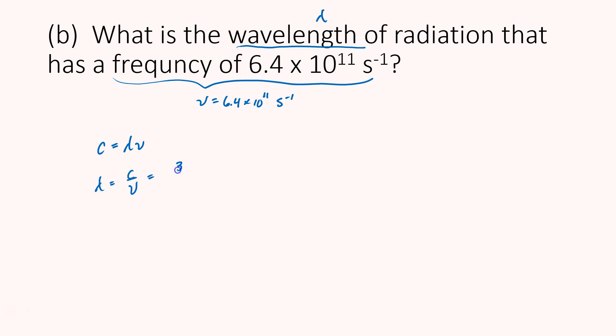C is 3.00 times 10 to the 8th meters per second. And this is kind of nice. The units of frequency can be used as they are. I'm just going to divide by 6.4 times 10 to the 11th. Reciprocal seconds could be rewritten as 1 over seconds. And notice that seconds cancel. And my units end up in meters.